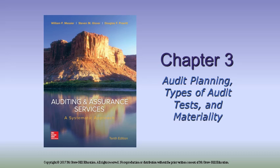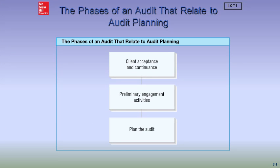Let's go ahead and start looking at the slides from Chapter 3. As we said in the introduction, we're going to be focusing on the preliminary stages of the audit, which begins with client acceptance. Then we'll get into some preliminary engagement activities, such as staffing the assignment and determining our preliminary assessments of risk. Then we'll begin to plan the audit, including understanding our materiality, and we'll look at some material from the text to help with that.